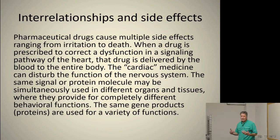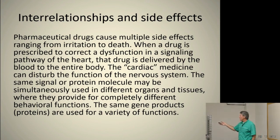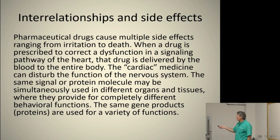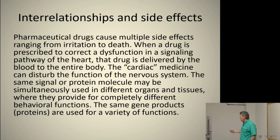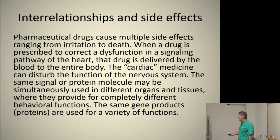Let's look at pharmaceutical drugs and this interaction. Pharmaceutical drugs cause multiple side effects ranging from irritation to death. When a drug is prescribed to correct a dysfunction in a signaling pathway of the heart, the drug is delivered by the blood to the entire body. The cardiac medicine can disrupt the functions of the nervous system. The same signal or protein molecule can be simultaneously used in different organs and tissues where they provide for completely different behavioral functions. The same gene products — proteins — are used for a variety of functions.